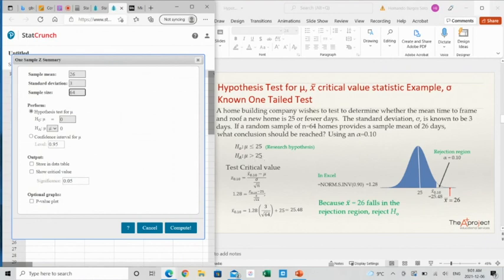We are going to check if this mu is more than 25. So here is more than, and here is 25. And I'm going to use a level of significance of 0.10. So I'm going to show the critical value at 0.10. I'm going to make a p-value plot. And compute.